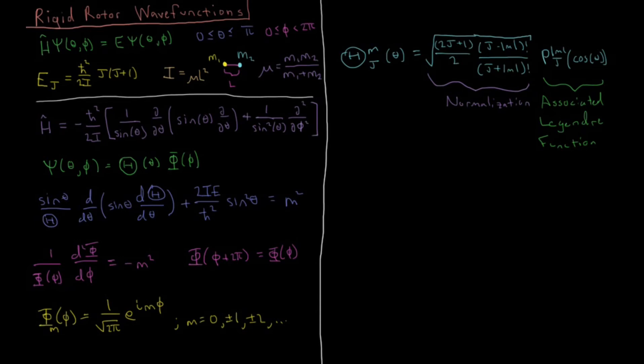Okay, so our total wave function then is going to end up being our psi of theta and phi, which is often written as this kind of Y of jm theta phi, which is really written this way because these end up being called the spherical harmonic functions, is a product of just this theta of theta and phi of phi.